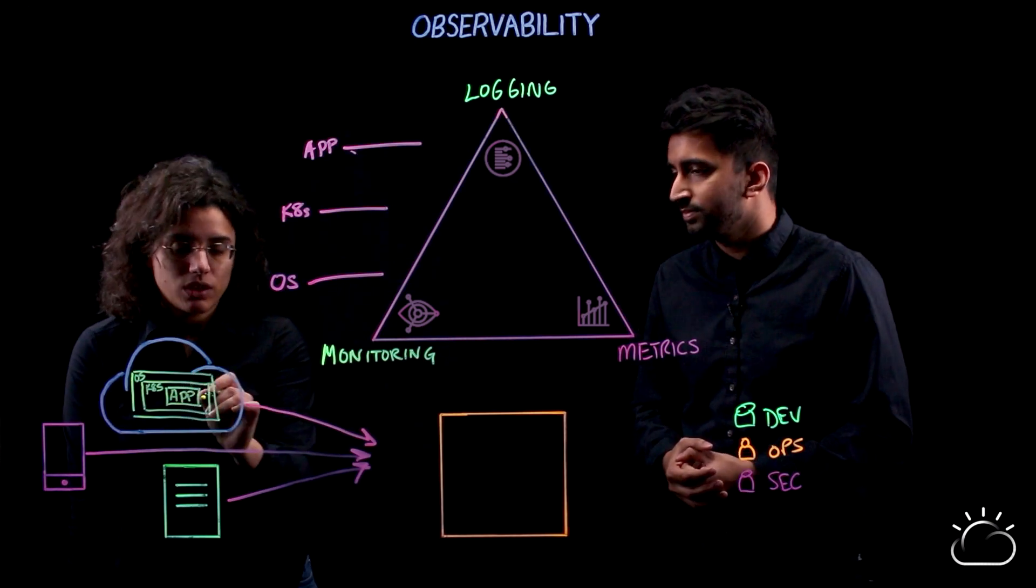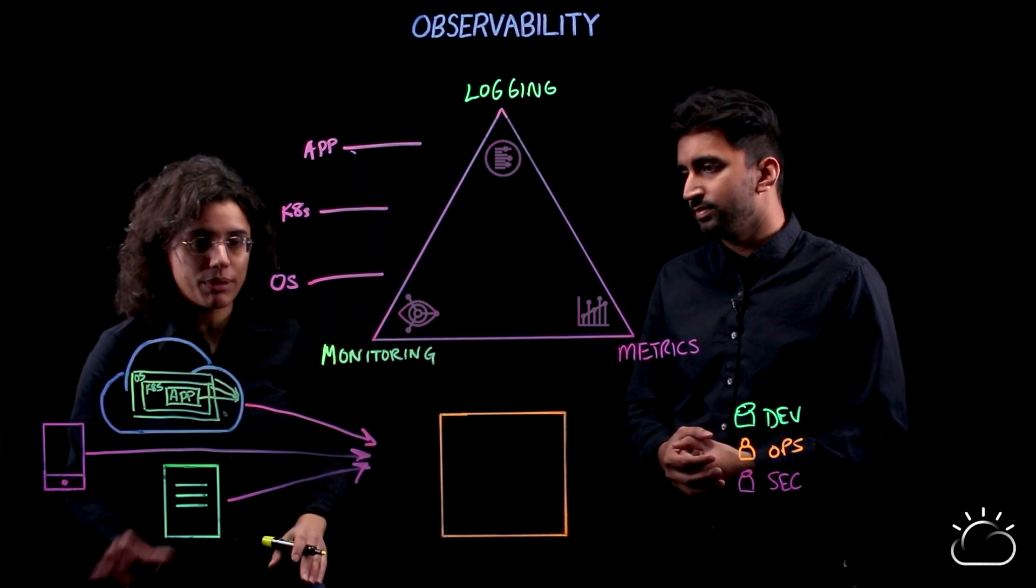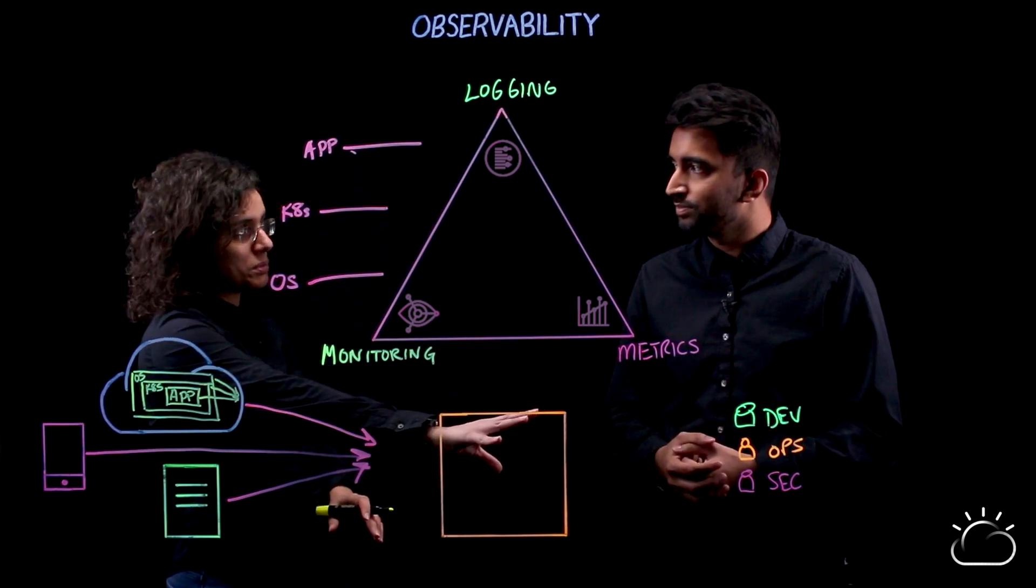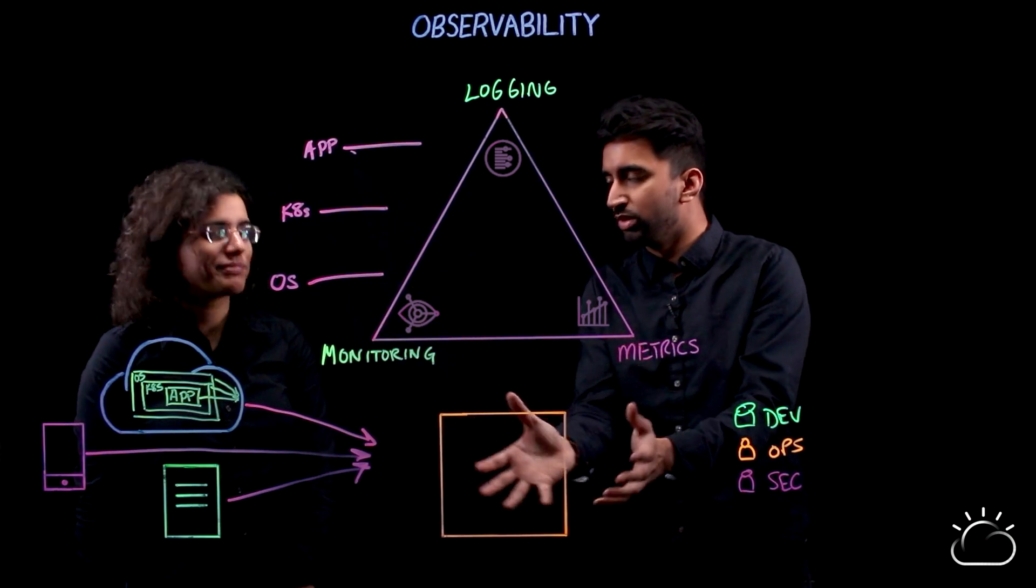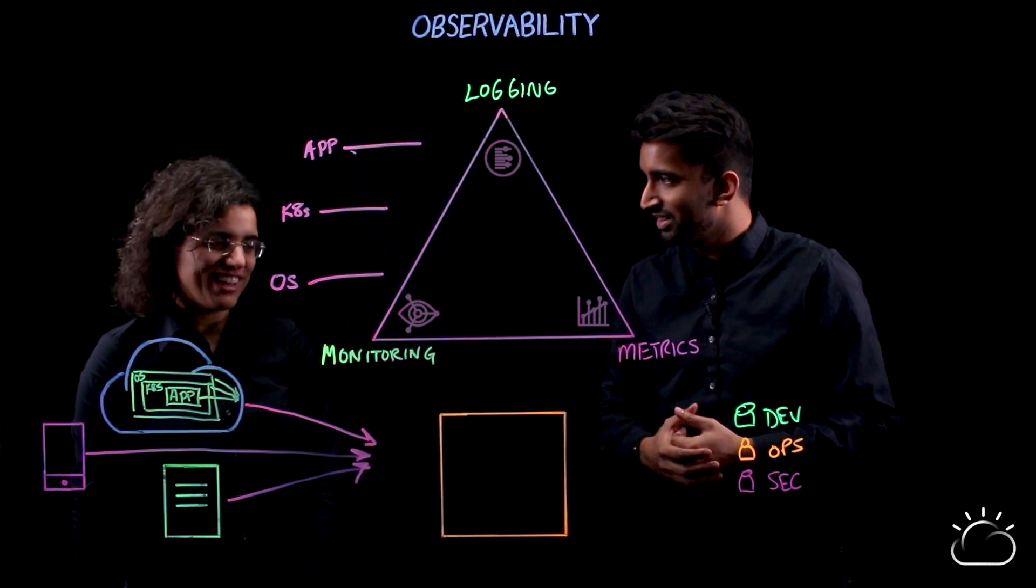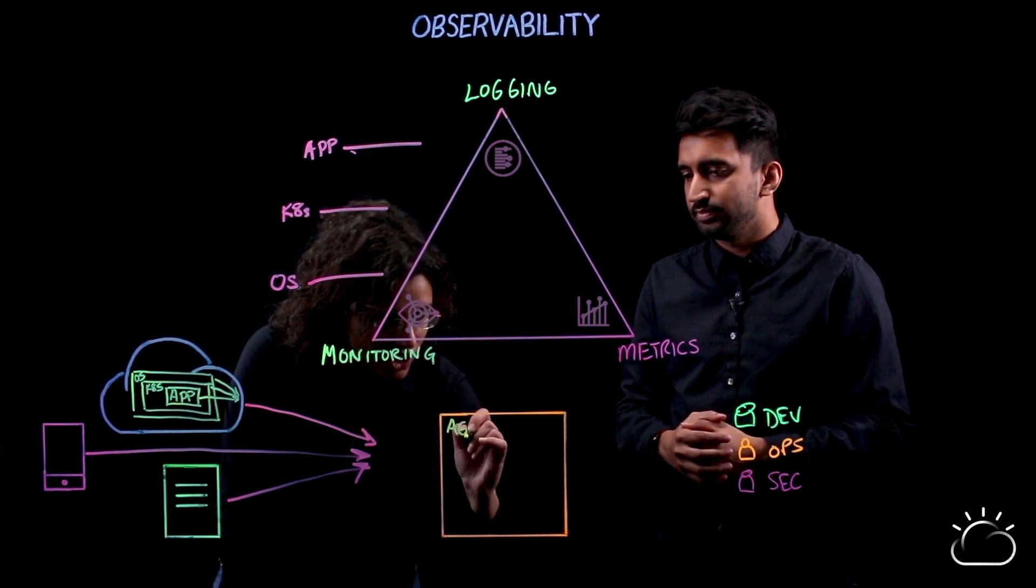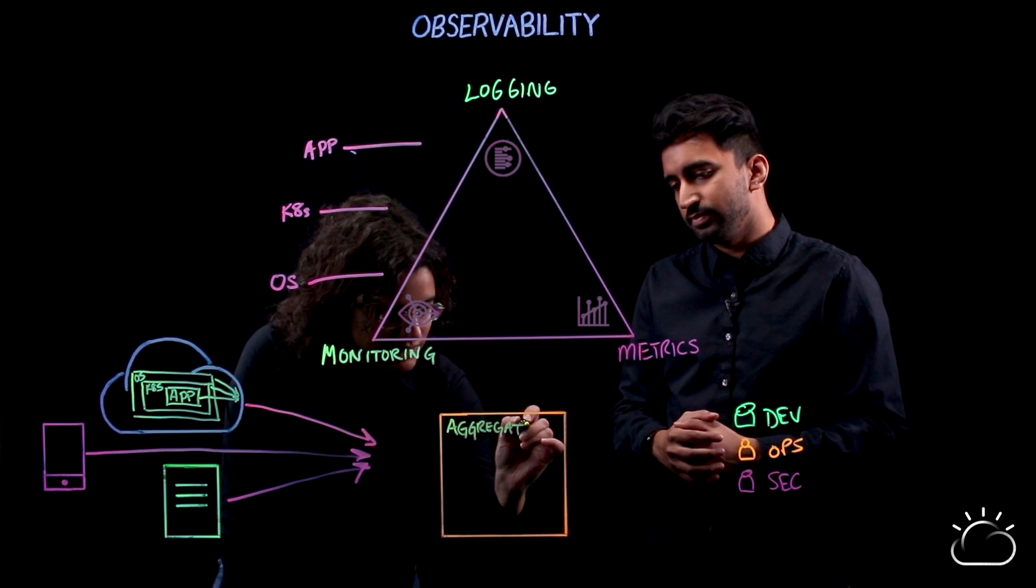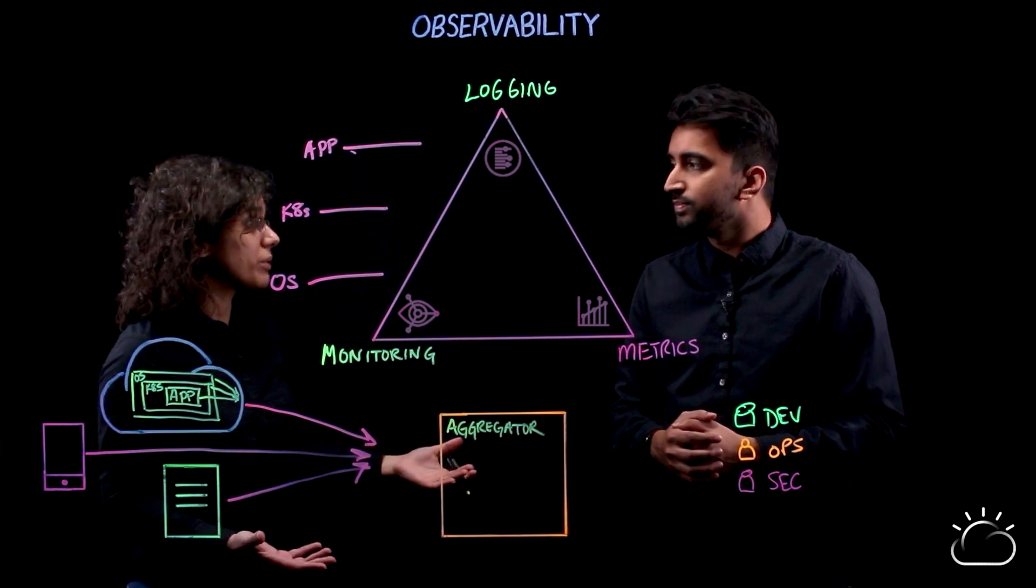And all of these are each sending data. So we have three different levels of data all coming out and trying to come towards the dev that wants some information. Right. So it looks like they're all coming into this central area here. That's right. We can talk about this as our aggregator. So our aggregator takes in all of this data and puts it all into one place so we can work with it.